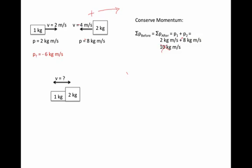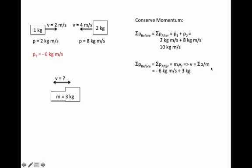We need to add momentum as vectors. We can look at the final result as one mass of 3 kilograms. By conserving momentum — total momentum equals mass times velocity — we solve for the final velocity as total momentum divided by mass. Dividing negative 6 kilogram meters per second by 3 kilograms gives 2 meters per second moving to the left. Checking: 3 kilograms times 2 meters per second equals 6 kilogram meters per second.